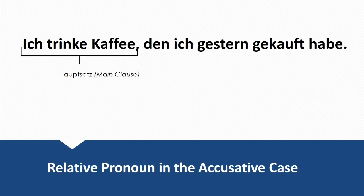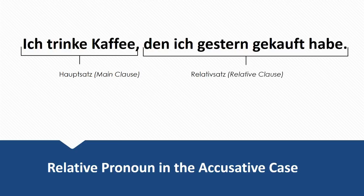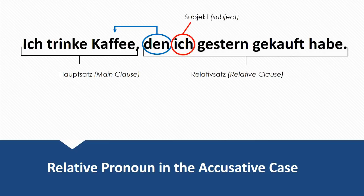Second example: Ich trinke Kaffee, den ich gestern gekauft habe. We have the main clause 'Ich trinke Kaffee' and the relative clause 'den ich gestern gekauft habe'. We're not using 'der' but 'den' this time, because den is in the accusative case. In the relative clause, the subject is 'ich' — I was the one who bought the coffee, I have the active part. That's why ich is the subject, and den is the direct object.